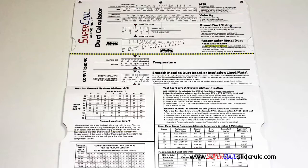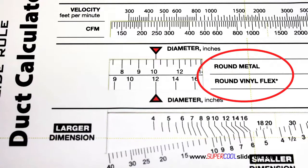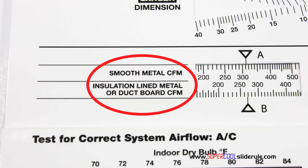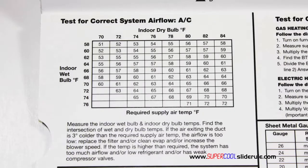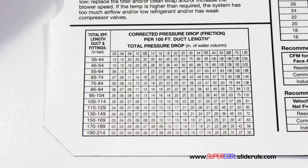Inside is packed with even more information. It performs sizing of both metal and flexible duct. It has the only direct reading conversion from smooth metal to insulation line metal we've ever seen. The majority of technicians have never been taught that if the insulation is on the inside of the ductwork, you cannot size it with a regular duct calculator. It has step-by-step directions for determining airflow through a gas furnace, electric furnace, or an air conditioning unit. It has pressure drop multipliers for ductwork as well as recommended velocities.